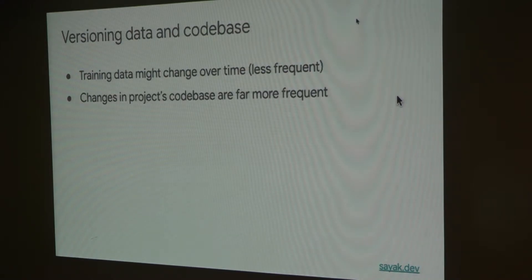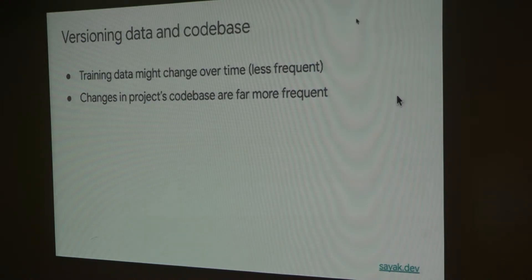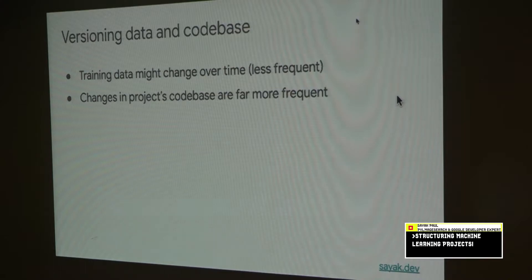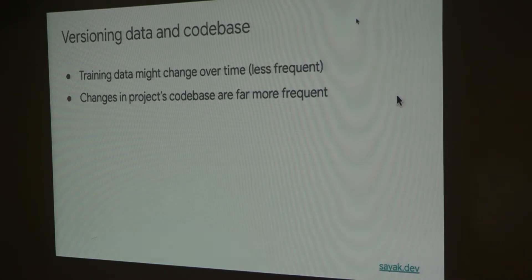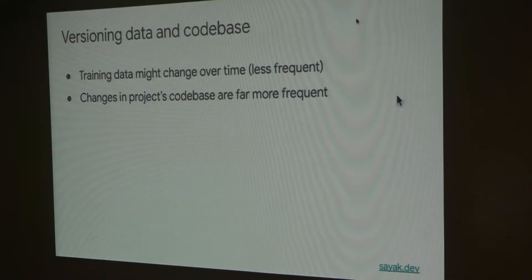Changes in a project's code base are more frequent than changes in training data, but both happen. These two things need to be in sync, and a good way to handle this is to separately version control your training data and separately version control your project's code base. You might not want to place your data alongside your code — we'll come to this separate versioning concept in a moment.